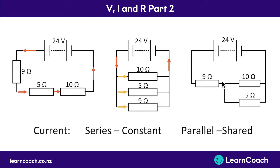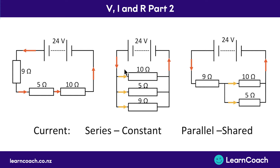In the combination circuit with both series and parallel sections, the current comes out of the battery and the whole current goes straight through the 9 ohm resistor. Then it splits up and goes either through the 10 ohm resistor or through the 5 ohm resistor before going back up to the battery. So in the series part the current is constant, and it only becomes shared when it reaches the parallel section.